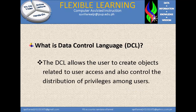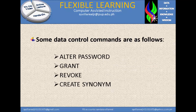What is Data Control Language, or DCL? The DCL allows the user to create objects related to the user, access, and also control the distribution of privileges among users — such as password and encryption. Some data control commands are: alter password, grant, revoke, and create synonyms. These cover actions like changing a password, granting access, handling password errors, and modifying passwords.